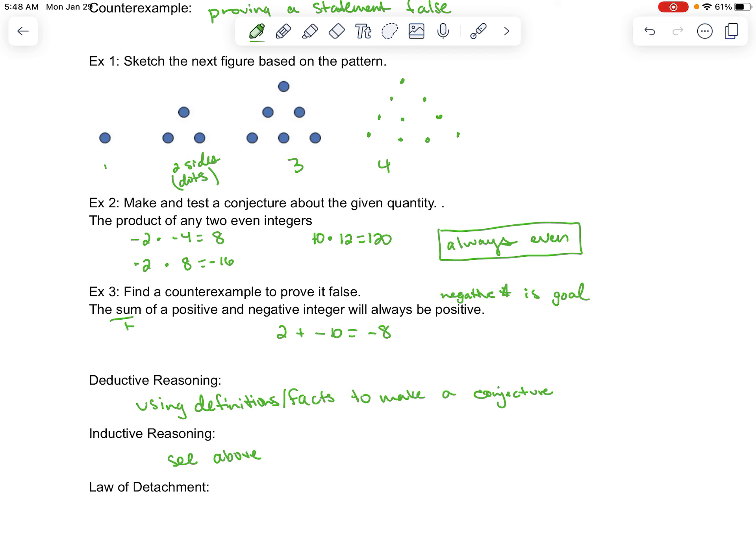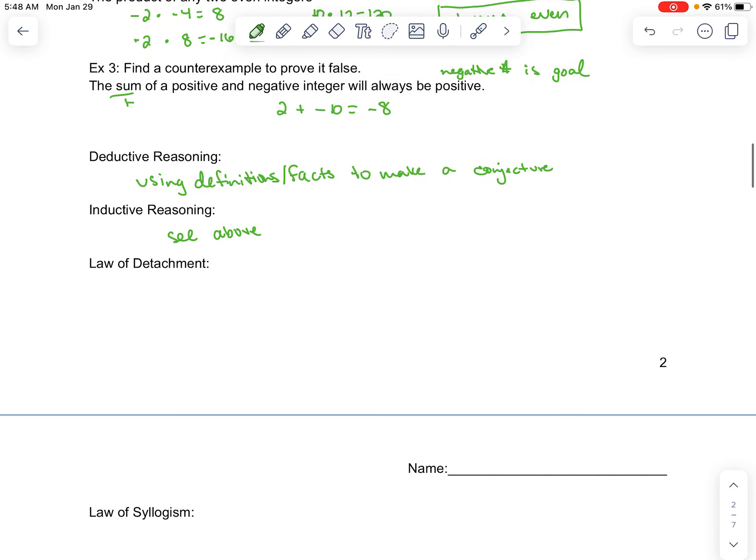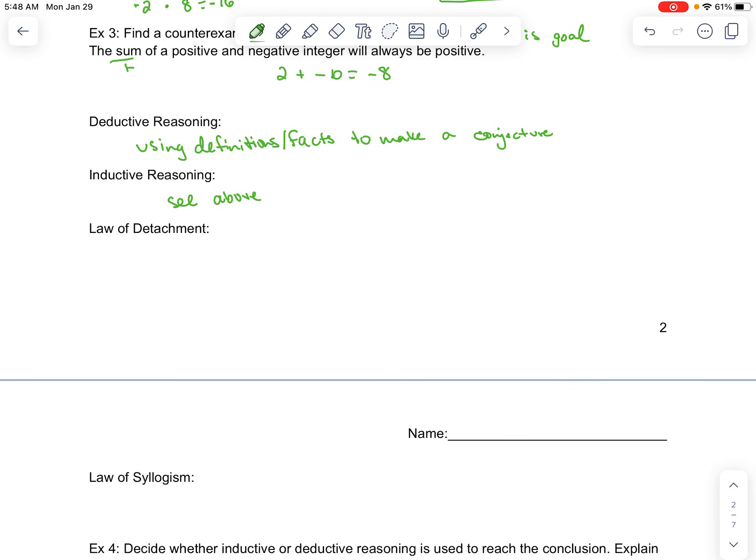So, then we have the law of detachment and law of syllogism. The law of detachment states, if P, then Q. So then they start with an if statement. And then what they do is they'll give you a P, which is then going to mean Q is true.